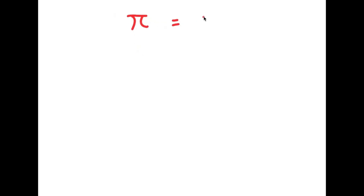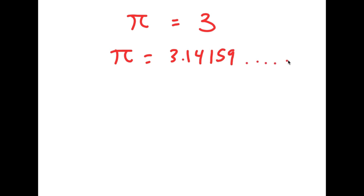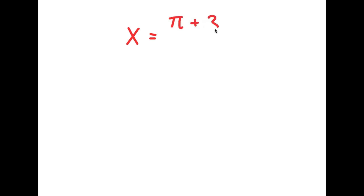In this video, I'm going to be proving that pi is equal to 3. As you probably already know, pi is an irrational number. I'm going to be proving that pi is actually equal to 3 and not the irrational number we all know it is. What I'm first going to do is start with the statement: x is equal to pi plus 3 over 2. All I'm doing is giving a value to a variable, which is completely legal.